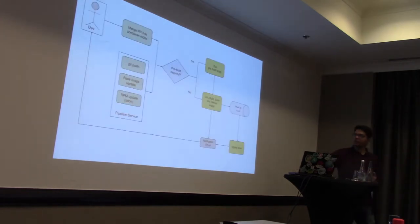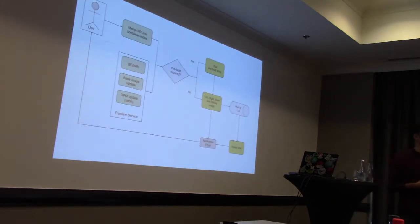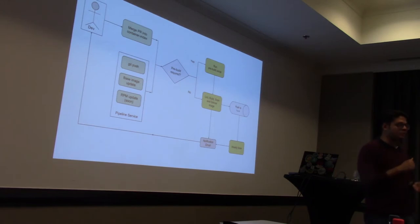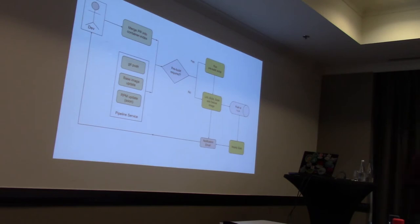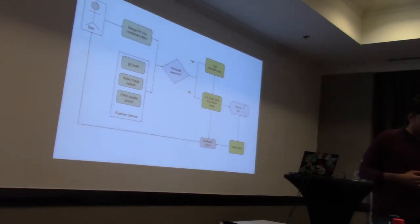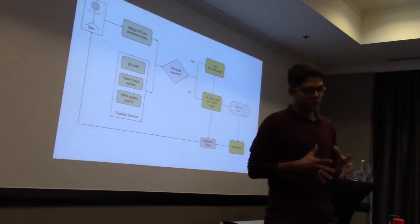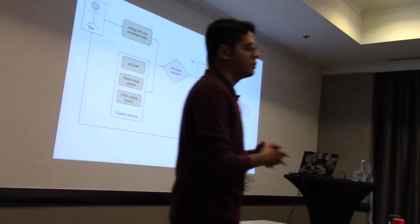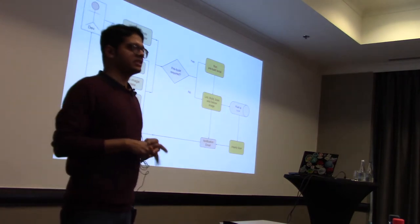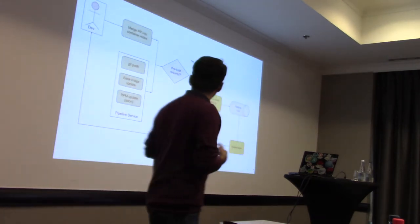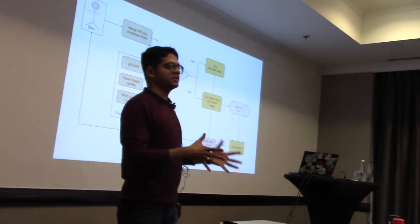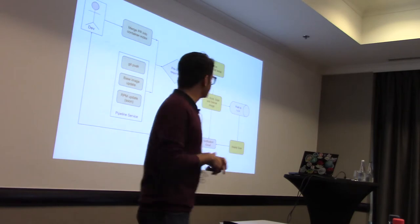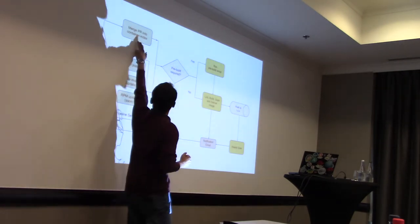I'm going to quickly talk about the workflow. If you have not used the container pipeline service before, the workflow is pretty simple. The only time you need to communicate with us is when you open a pull request on the container index. We request certain YAML entries from you — we request you to open a pull request and the file will be in YAML format. Once the pull request you've opened is merged, we first check if pre-build is required.